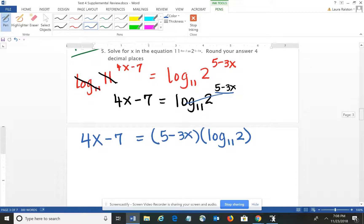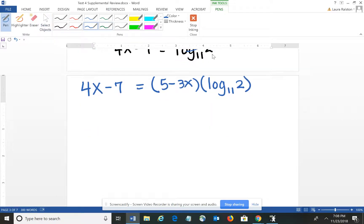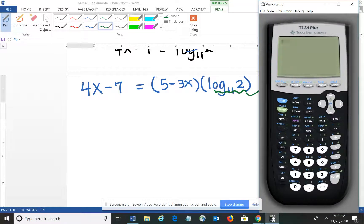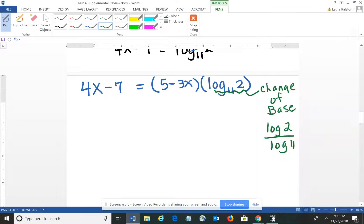Now at that point, I could go ahead and get the value for log base 11 of 2. To do that, we'd have to use the change of base. So using the change of base, I would have log of 2 divided by log 11. If I round that on my calculator, we get .28906, so I'm going to round that to .2891.